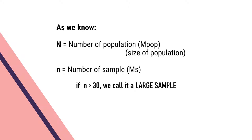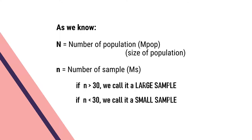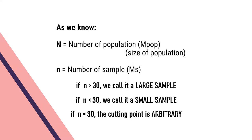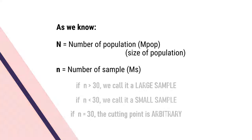If the size of the sample, small n, is greater than 30, we call it a large sample. If size of the sample n is less than 30, we call it a small sample. If n is equal to 30, this cutting point is arbitrary — it is a matter of convenience.